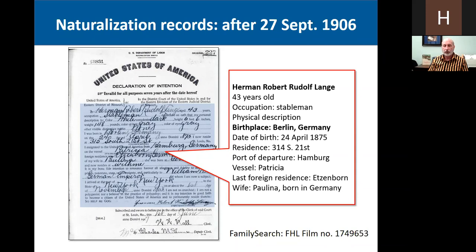However, if your ancestor came after September 27, 1906, usually these records are very detailed because the forms directly ask where you were born. In this case, this is Hermann Robert Rudolf Lange, 43 years old, a stableman. He gives his physical description and lists his birthplace as Berlin, Germany; his date of birth; his residence at the time of application; where he departed Germany; what vessel he immigrated on; his last residence in Germany; and his next of kin. So lots of information there. It's too bad that kind of information was not always available before 1906.